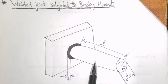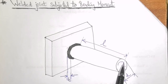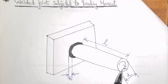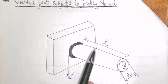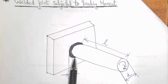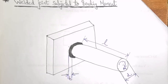This shaft is now subjected to a bending moment M. When this shaft is subjected to bending moment M, it will exert bending stresses on this weld. Now let us derive the relation of the bending stress induced in the weld.